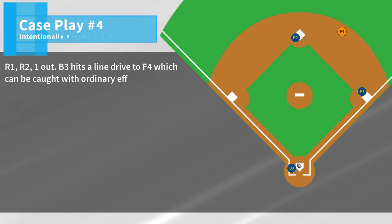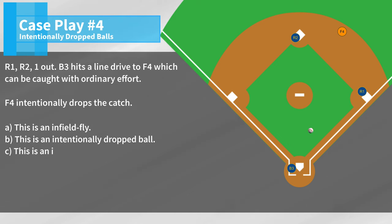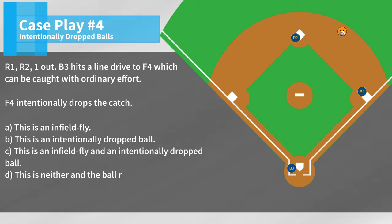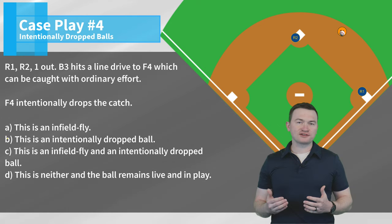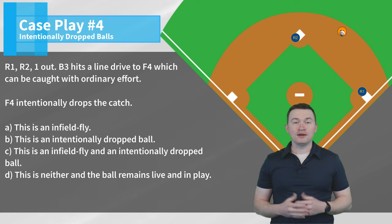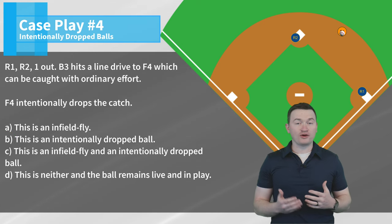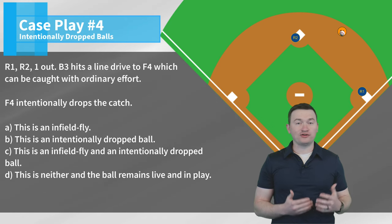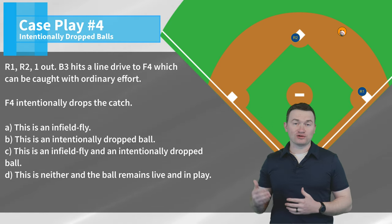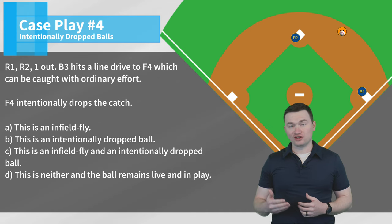Case play number four. R1, R2, one out. B3 hits a line drive to F4 which can be caught with ordinary effort. F4 intentionally drops the catch. Is this: A) this is an infield fly; B) this is an intentionally dropped ball; C) this is an infield fly and an intentionally dropped ball; or D) this is neither and the ball remains live and in play. The correct answer is B — this is an intentionally dropped ball. Yes, it does start in a scenario where we could have an infield fly, but an infield fly has to be a fly ball or pop-up and this is a line drive. A line drive can, however, be an intentionally dropped ball, which is what we have here.